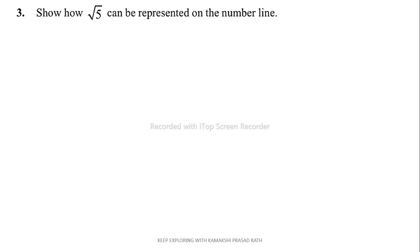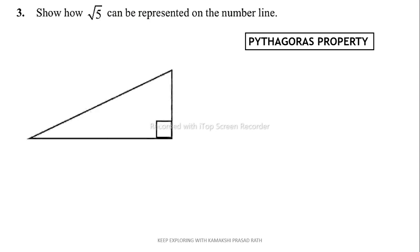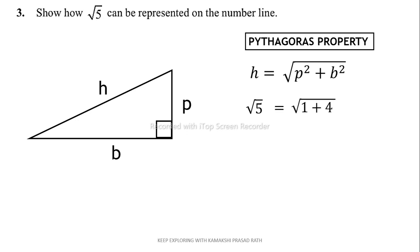Question 3: how can √5 be represented on the number line? As we know, √5 is an irrational number. For this we will use the Pythagorean property, which says that in a right triangle the hypotenuse is given by √(p² + b²). Here h will be taken as √5, so 5 has to be written as a sum of two squared numbers: 1 + 4, since both 1 and 4 are perfect squares.